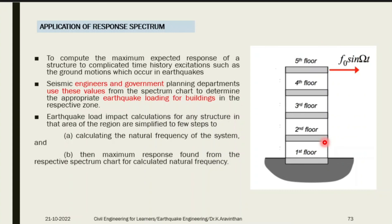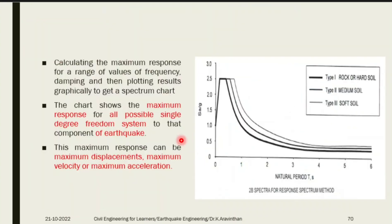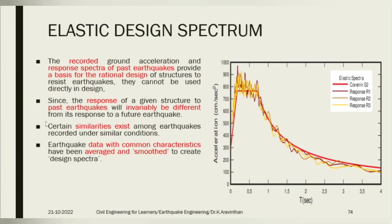For a G+5 building, the process involves two steps: first find the natural frequency of your building, then check it against the response spectra graph. If the natural frequency is around 30 radians per second, convert it to natural period and find the corresponding acceleration from the spectrum. This elastic design spectrum is based on past earthquake records and used for rational structural design, though past earthquake records cannot be used directly — the data must be normalized.